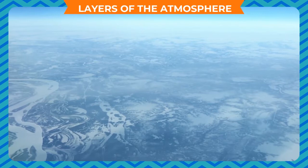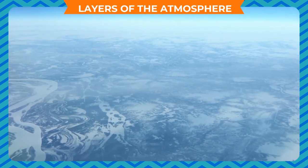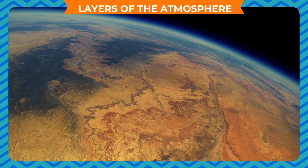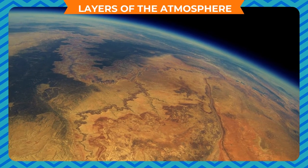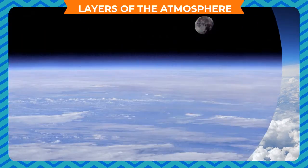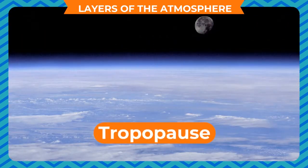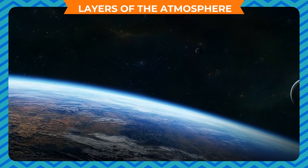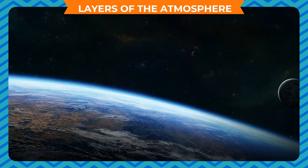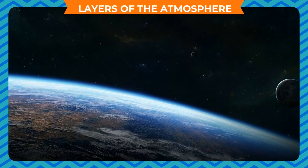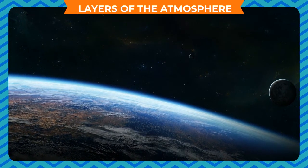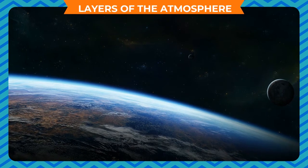The temperature decreases by about 6.5 degrees Celsius per kilometer. The troposphere contains about 90% of the air of the atmosphere and almost all of the water vapor. The top of the troposphere is called the tropopause, which separates the troposphere from the stratosphere. It is about 7 to 10 kilometers thick at the poles and 17 to 18 kilometers thick near the equator.